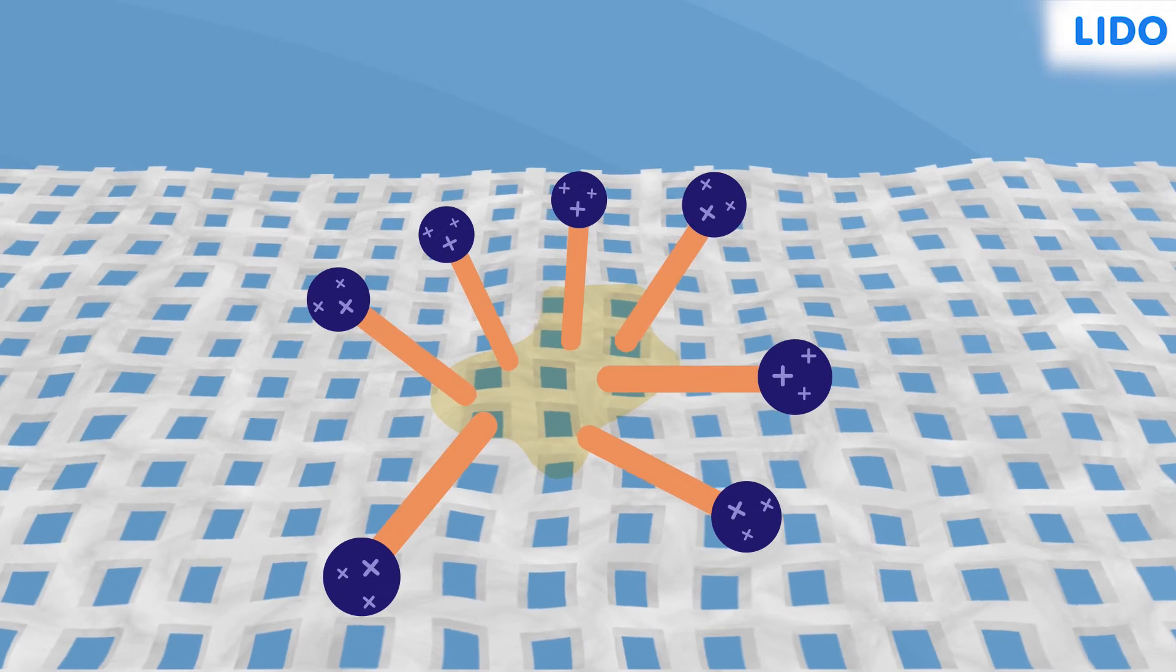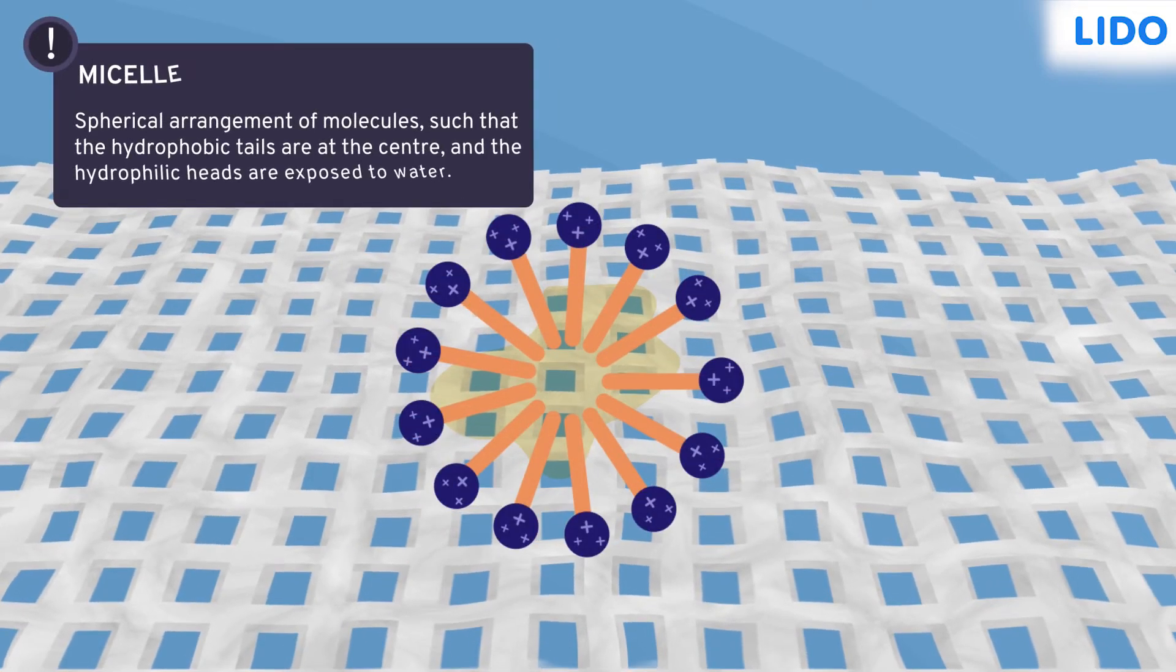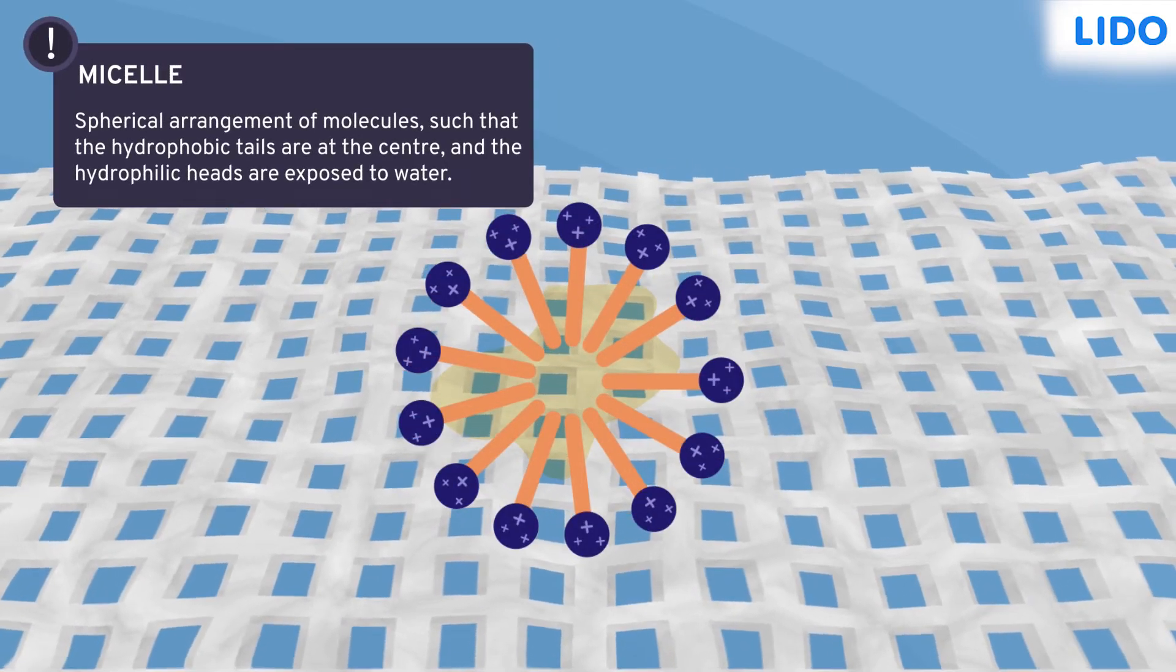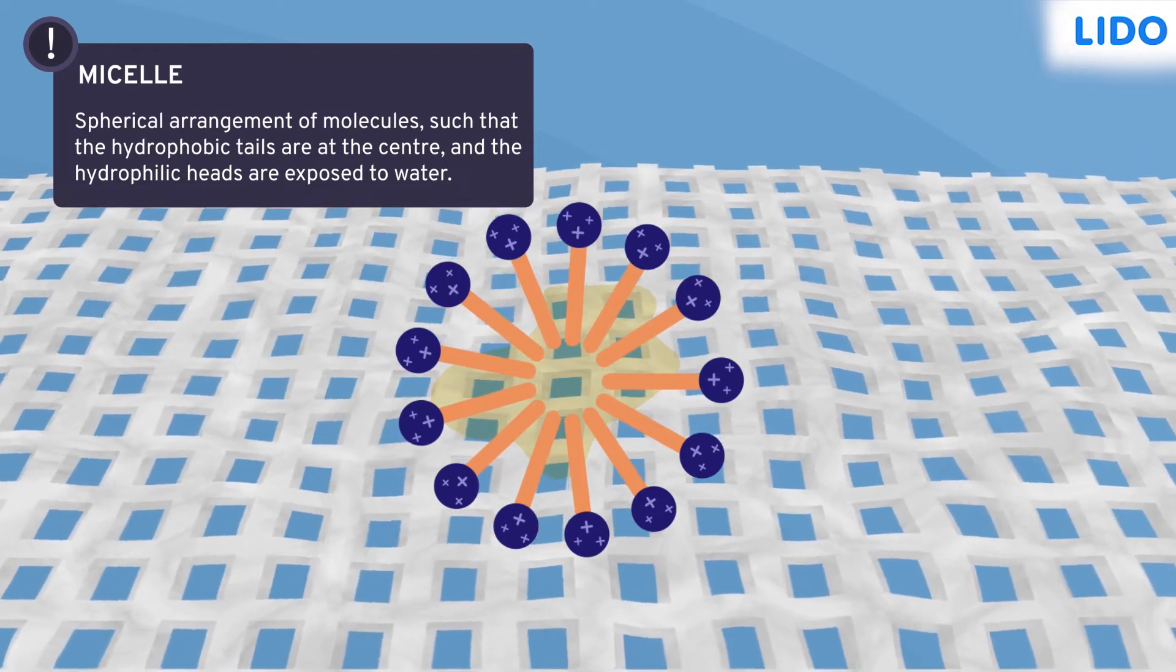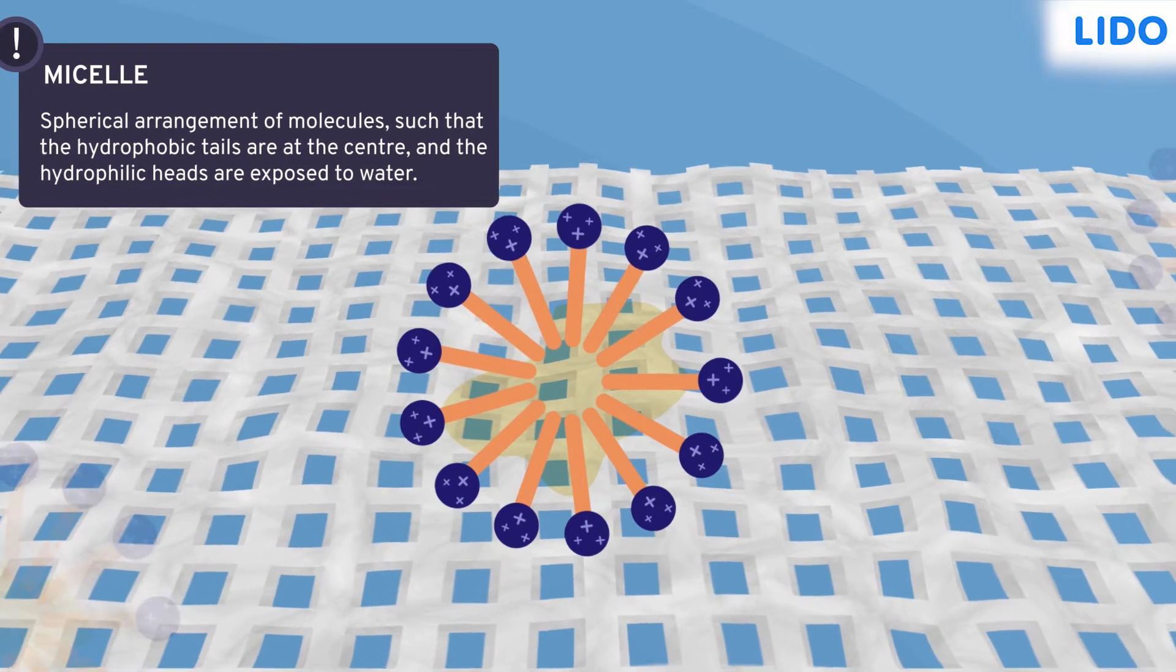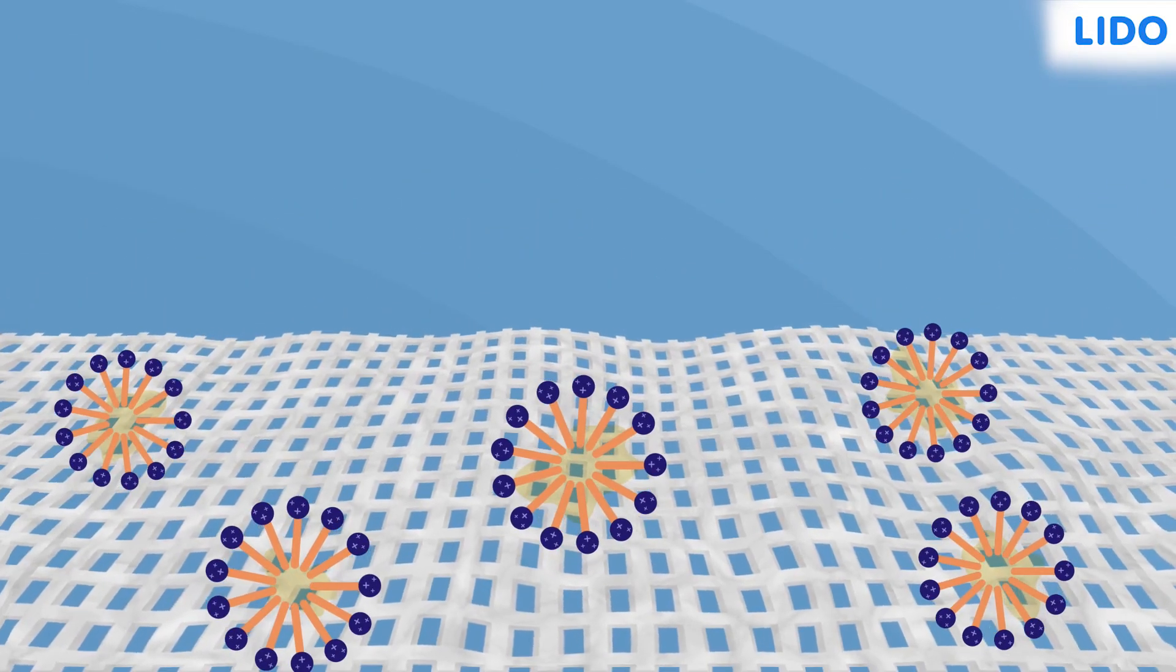The arrangement is such that only the hydrophilic heads of the detergent are visible and all the tails enclose and trap the stain. This spherical arrangement is called a micelle. Many such micelles are formed in and around the stains.